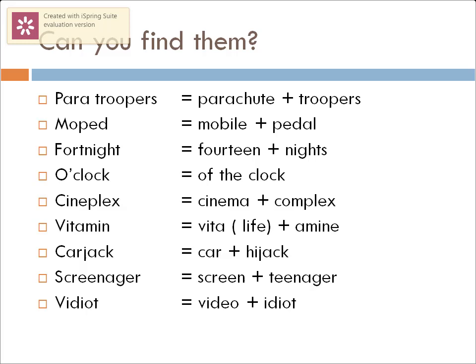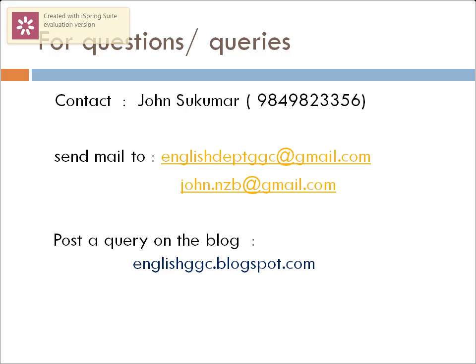'Paratroopers' comes from 'parachute' plus 'troopers'. 'Moppet' is a combination of 'mobile' and 'pedal'. 'Fortnight' is a combination of '14 nights'. 'O'clock' means 'off the clock'. 'Cineplex' is a blending of 'cinema' and 'complex'. 'Vitamin' is a combination of 'vita', meaning life in Latin, and 'amine'. 'Screenager' means someone who is always on screen — a teenager who is always on the screen.